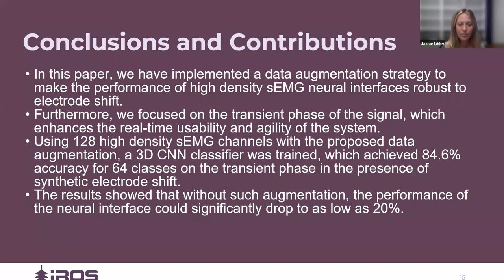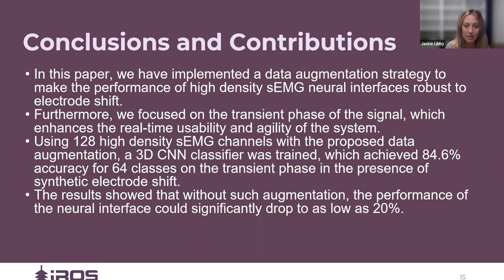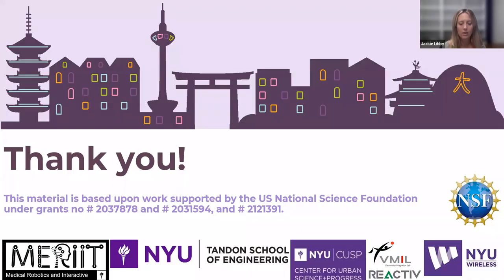In this paper, we have implemented a data augmentation strategy to make the performance of high-density sEMG neural interfaces robust to electrode shift. Furthermore, we focused on the transient phase of the signal, which enhances the real-time agility of the system. Using 128 high-density sEMG channels with the proposed data augmentation, a 3D CNN classifier was trained, which achieved 84.6% accuracy for 64 classes on the transient phase of the signal in the presence of synthetic electrode shift. The results show that without such augmentation, the performance of the neural interface could significantly drop to as low as 20%.